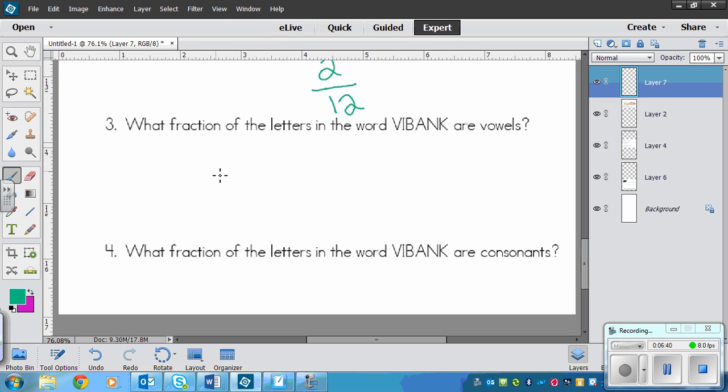All right, now let's move on to the letters in VIBANK. This one is asking for the letters in the word VIBANK that are vowels. Remember, that's A, E, I, O, and U, sometimes Y, but we don't have a Y. What fraction of the letters in the word VIBANK are vowels? We need to figure out how many letters in total there are. We've got one, two, three, four, five, six, about six letters. Now which ones are vowels? I'm looking for A, E, I, O, and U. I can see that I is a vowel and A is a vowel. So that tells me that there are two vowels, two out of six are vowels.